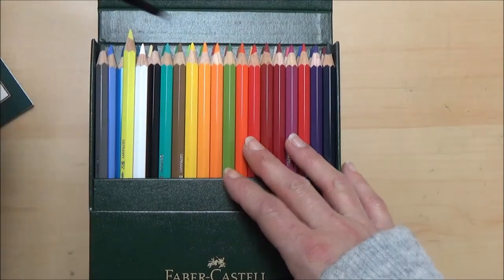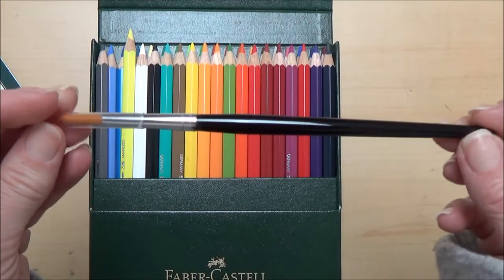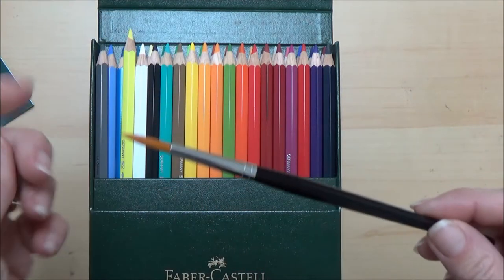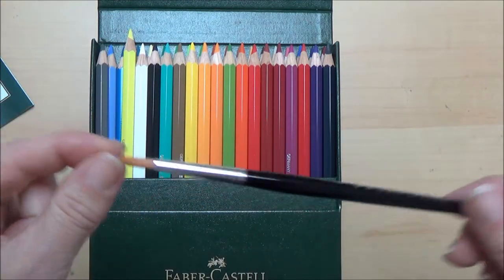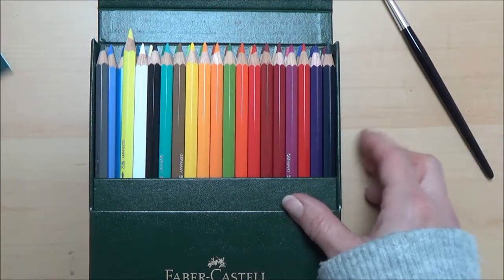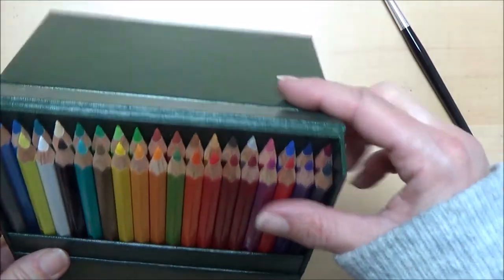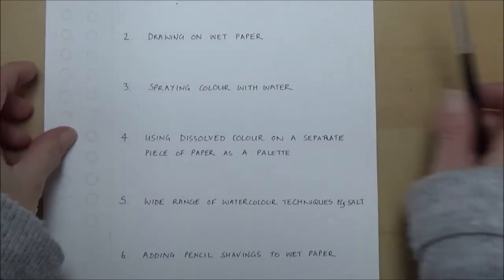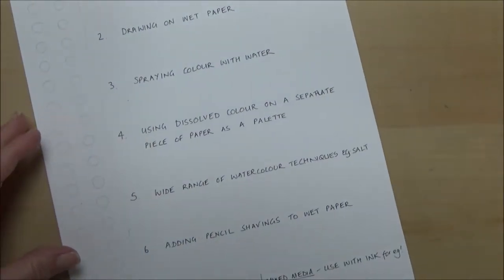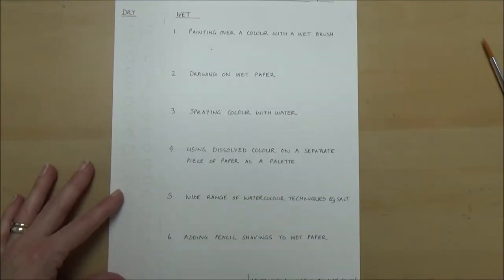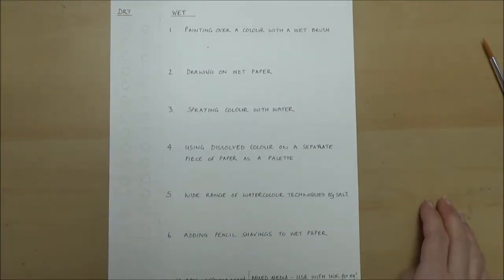You also get in this set a paintbrush as well. That's just a round paintbrush in size 6 and it looks fairly good quality but I'm going to try that out as well when we do the testing of the pencils. The pencils themselves are really nice quality. Their casing is made of Californian cedarwood so they're quite nice and hard. On each pencil it will also tell you the color as well as the light fastness and the brand.